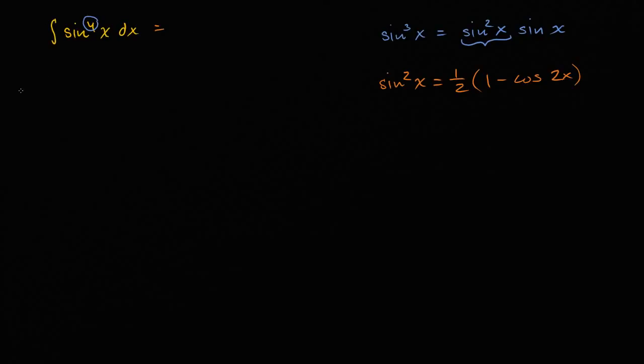So how can I apply this? Our original integral is just the same thing as the integral of sine of x squared, all of that squared, dx. Now I can make this substitution using the double angle identity. So I can rewrite it as the integral of one half times one minus cosine of two x, and then all of that squared dx.